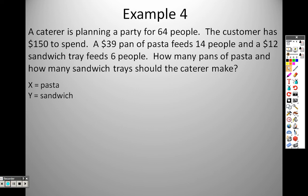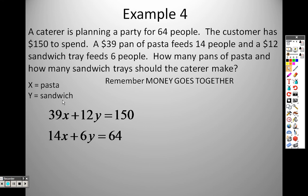And once again, if you remember, I said make money stay with money. Whenever you're making these together, make money stay with money. We're saying that it costs $39 for a pan of pasta and $12 for sandwiches. That's why I have 39x, because $39 for one pan of pasta and $12 for a sandwich tray. And all the money we have to spend is 150. That's why that all equals 150. One pan of pasta, which is the x, feeds 14 people. So there it is, 14 for one pan. And six trays of sandwiches, and sandwiches are y, so that's why it's 6y. And there's a total of 64 people coming. So that's why I have those two equations set up as I do. The key there is to remember that money goes with money when you're doing this.